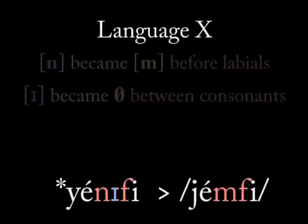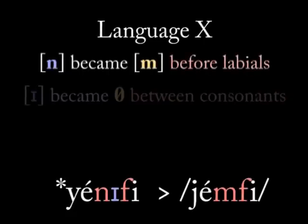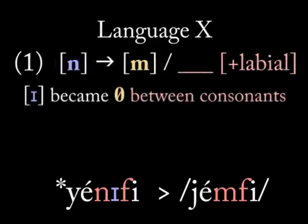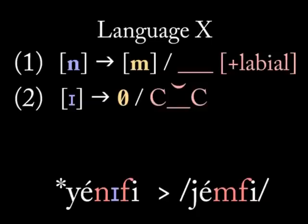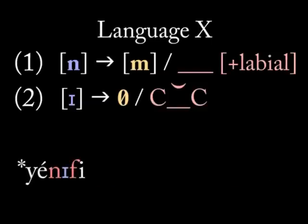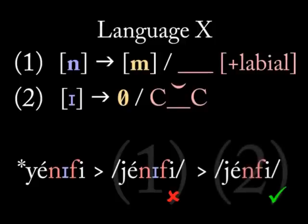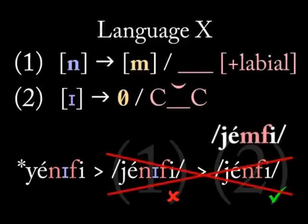To answer that question, let's build rules for the two sound changes. First, N becomes M before a consonant with the feature labial. Second, unstressed I becomes nothing when it's between two consonants. If the proto-word is YENIFI, then applying rule one first leaves us with YENIFI — since N doesn't assimilate to a following vowel. But then rule two applies, leaving us with YENFI. But language X has YEMFI, not YENFI — so scratch that.